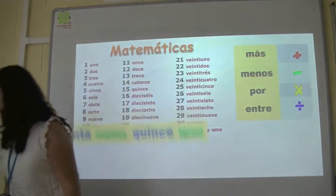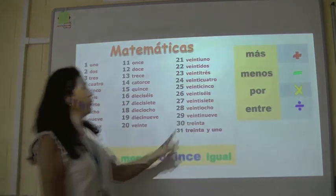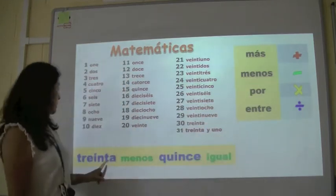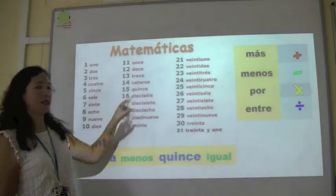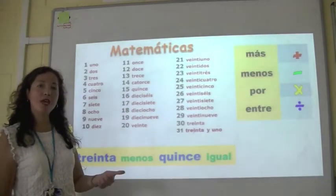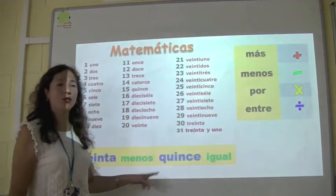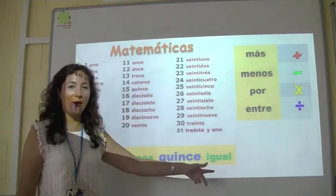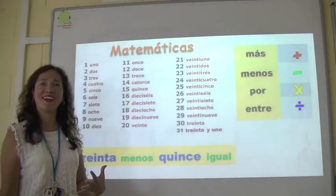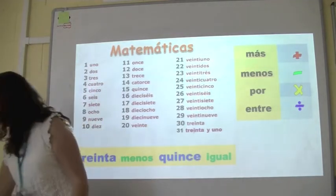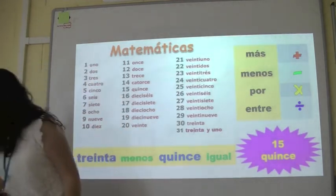Sigamos. Treinta menos quince — thirty minus fifteen. Treinta menos quince, igual — quince. Sí, es quince. Excelente!